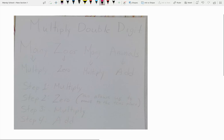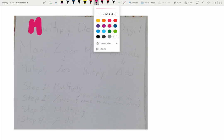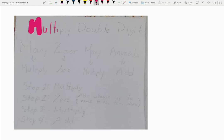On the top of your anchor chart, go ahead and write the title, multiply double digits. Basically, you know that this anchor chart is about multiplying double digits.